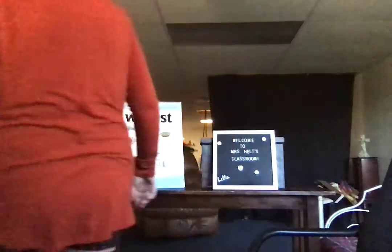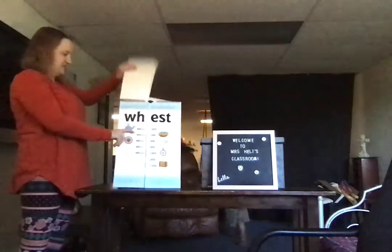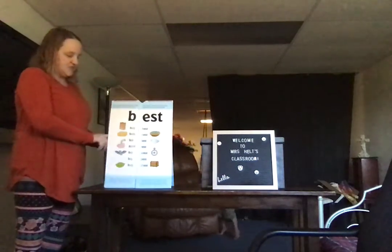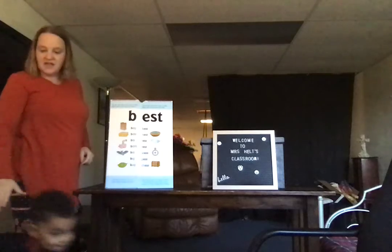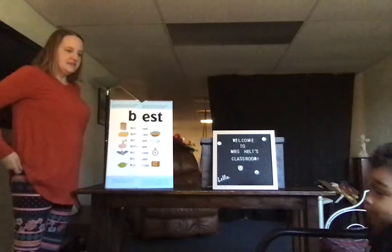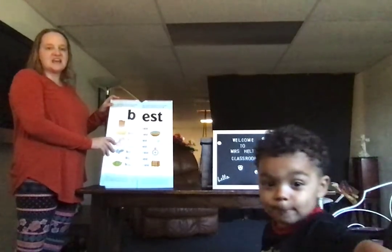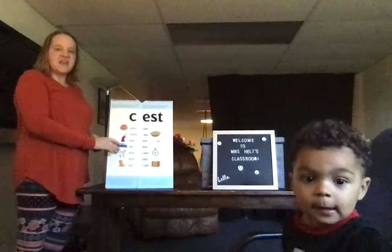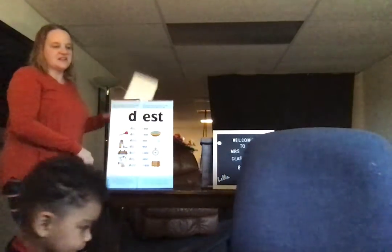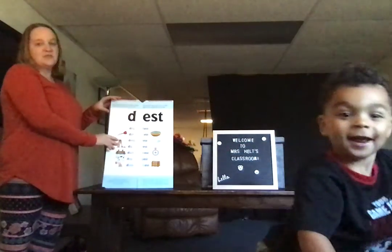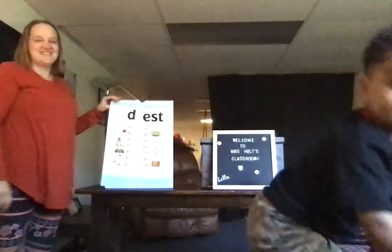We're going to come back here and do our phonics — our word family. So we are doing the word family EST this week. Everybody say best. Now change the b to k — and the word is kest. Everybody say kest. Now change the k to d — and the word is dest. Everybody say dest. Now change the d to f — and the word is fest. Everybody say fest. Now change the f to g — and the word is guest.